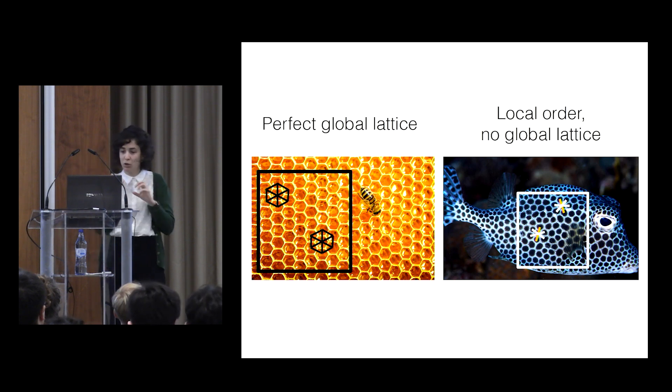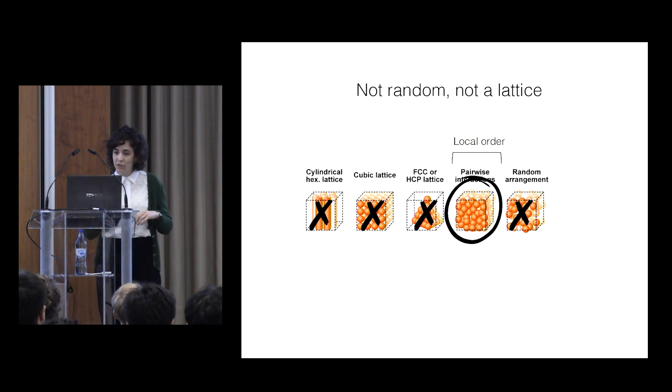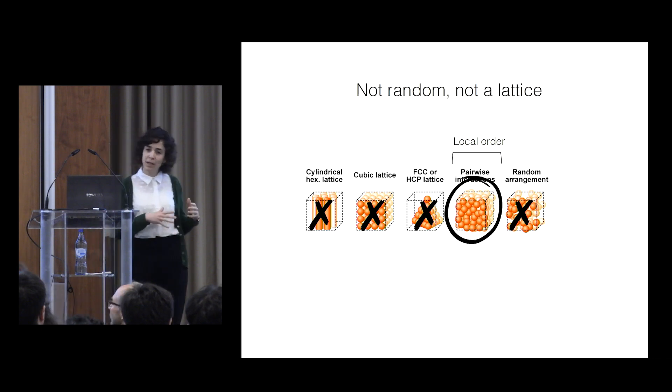It needs to rotate. So there is local order here, but there is no global lattice emerging. And so we have now something that is, it's not completely random, but it's also not completely a lattice. It's somewhere in the middle, and we see local order.